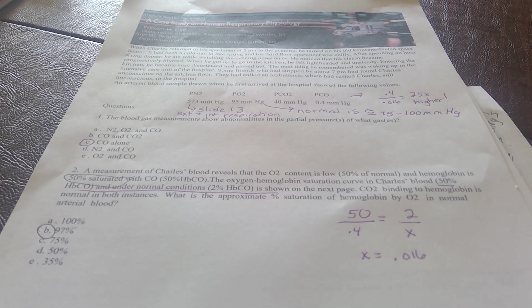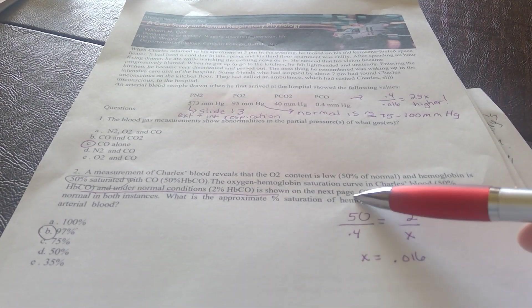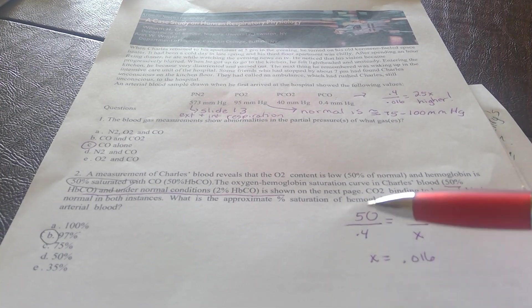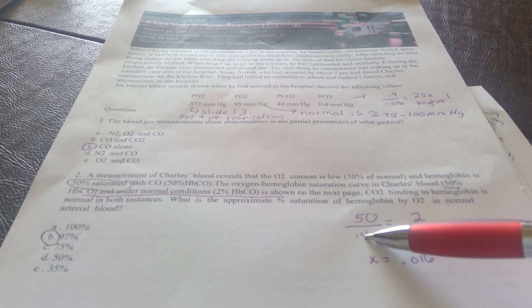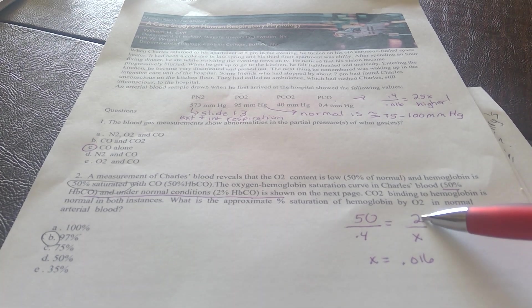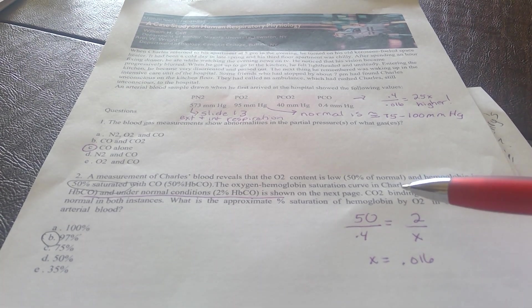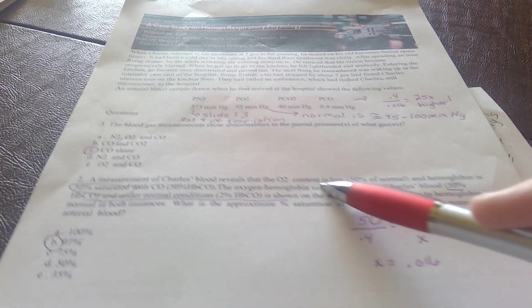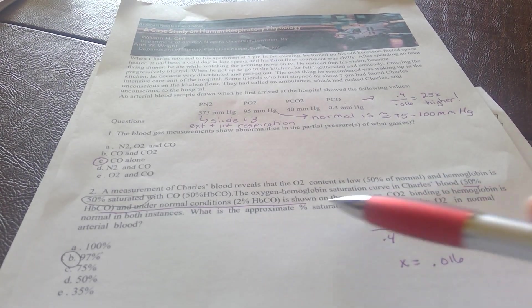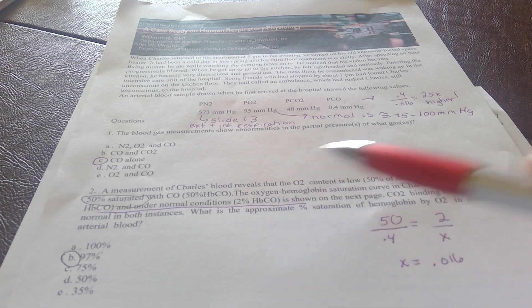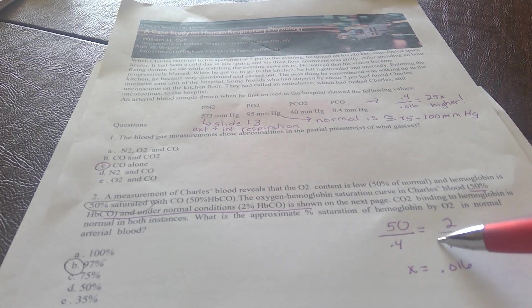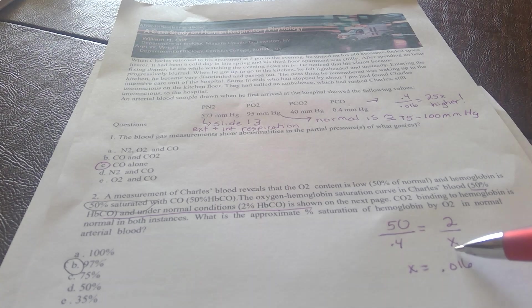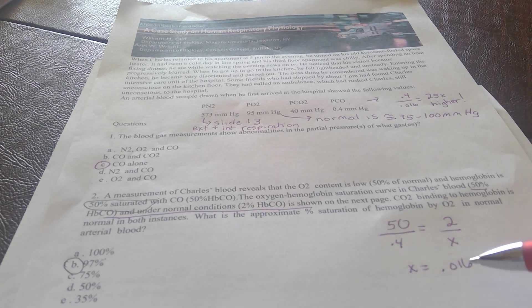So if I look at his ratio, 50% and he has a partial pressure of 0.4, and normal levels of carbon monoxide we're told is about 2%, we need to solve for normal values. If I solve for X, I get 0.016.